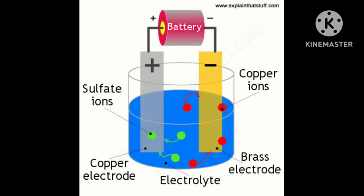Electroplating is essentially an electrolysis process. Metal ions in the electrolyte solution undergo reduction and get discharged as metal atoms on the cathode surface.